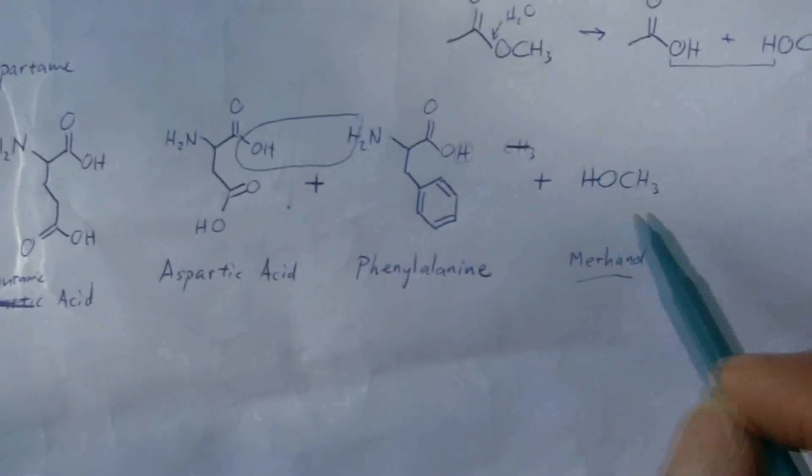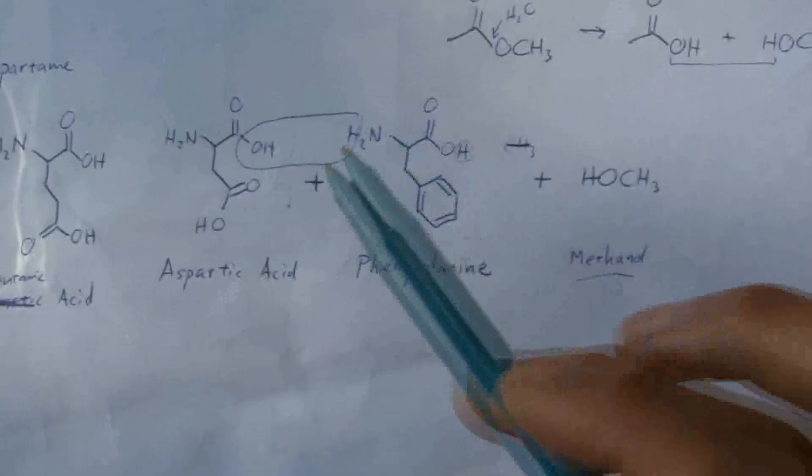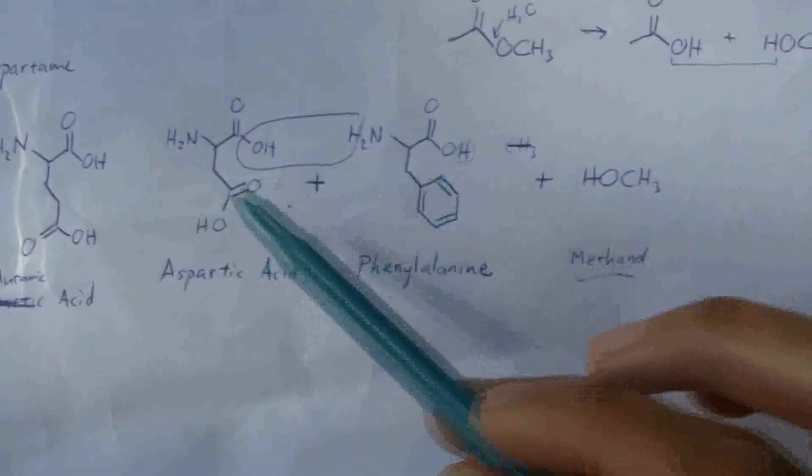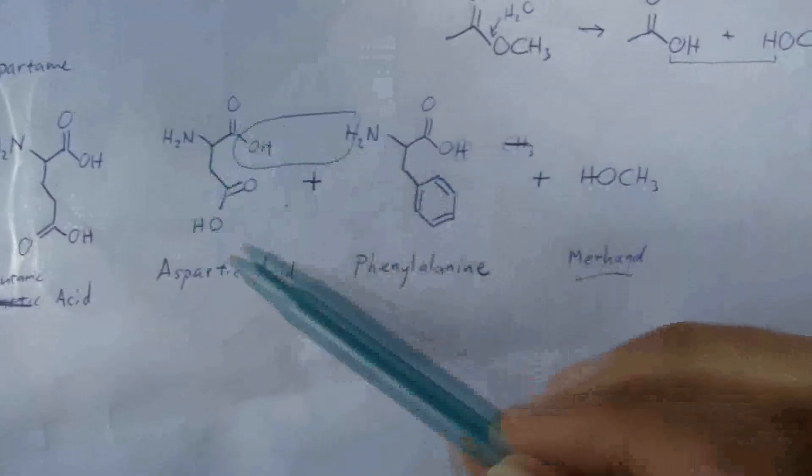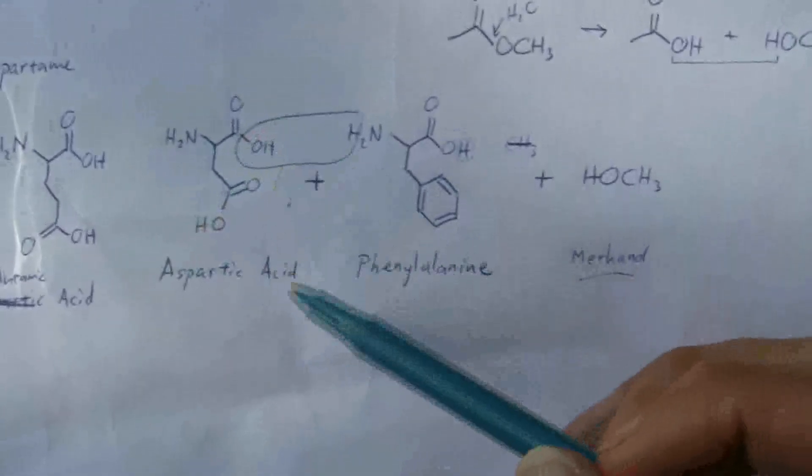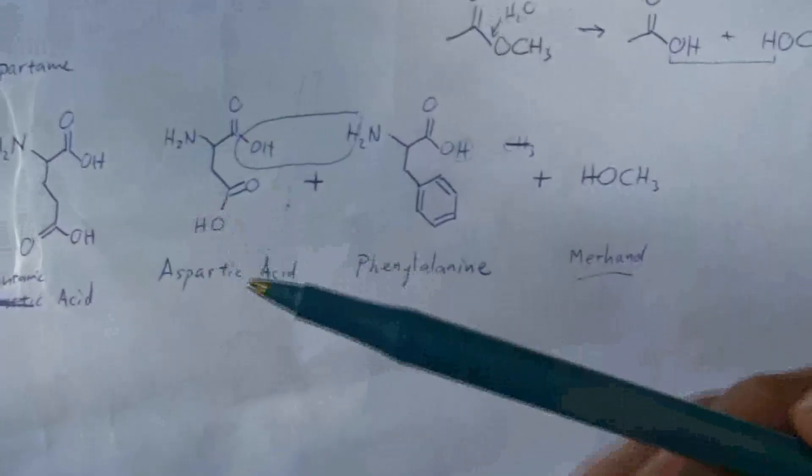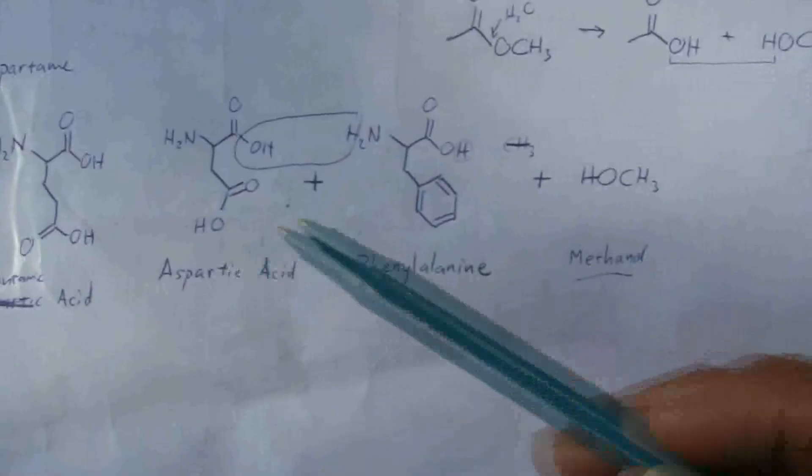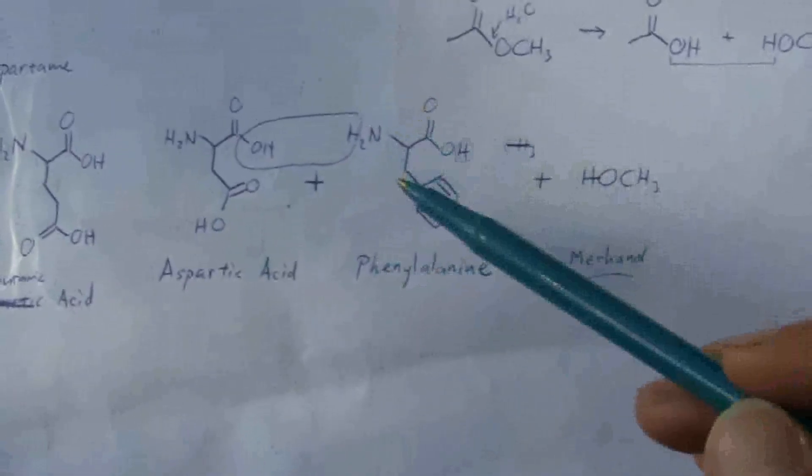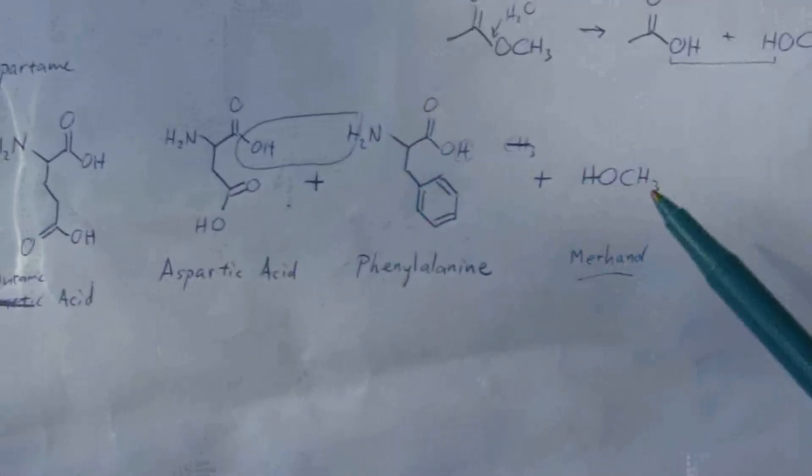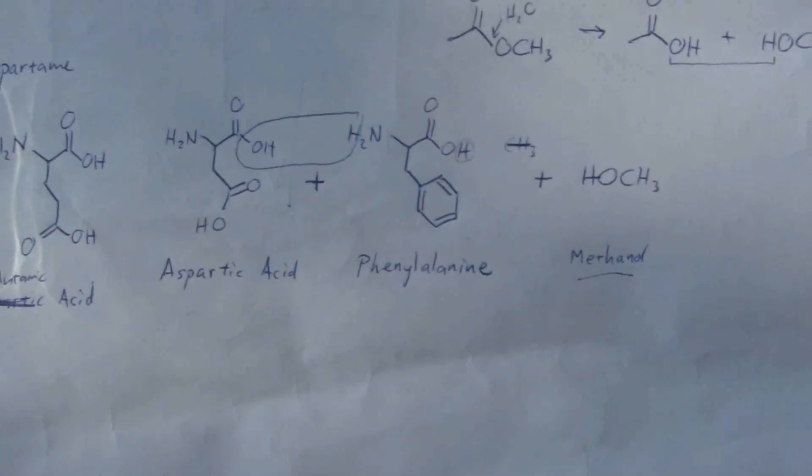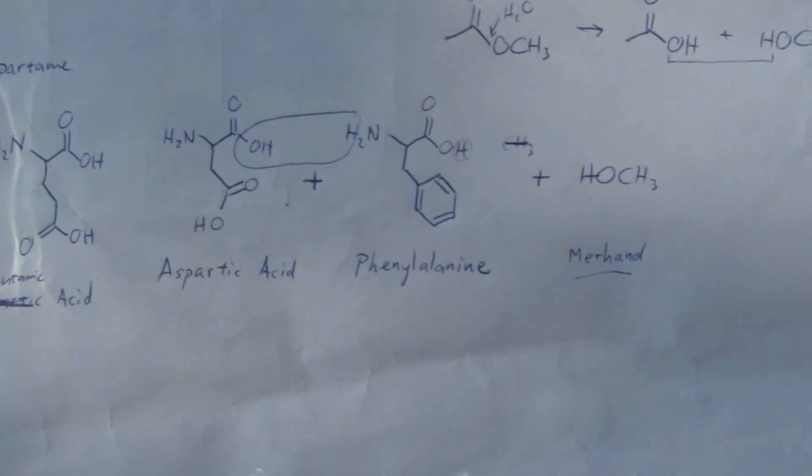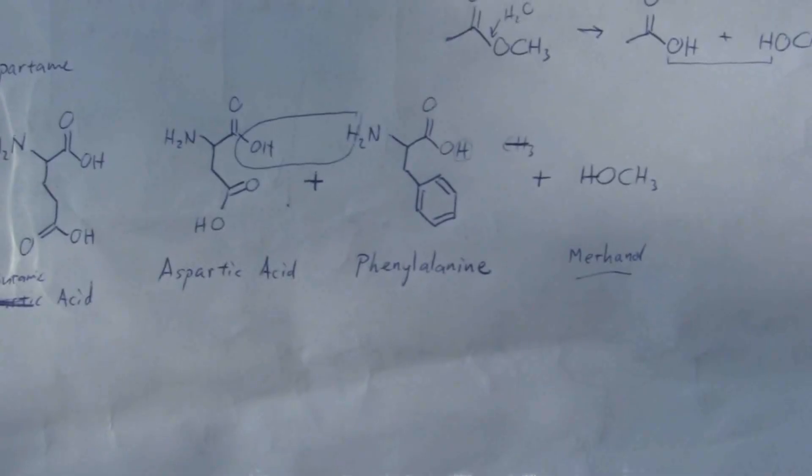So you end up with these breakdown products from the aspartame to what are known as, or rather, just one, excitotoxin, because it over-excites your brain cells and effectively is toxic to them. And you get this other amino acid and another toxic substance burdening your liver, methanol. So that is what happens when these substances are ingested in your body.